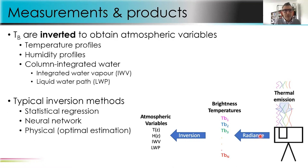Brightness temperatures are then inverted to obtain atmospheric variables: temperature profiles, humidity profiles, and also column-integrated water in terms of integrated water vapor and liquid water path. To invert brightness temperatures into atmospheric variables, you need inversion methods. Typical inversion methods are statistical regression and neural network, usually provided by manufacturers in their software. However, there are also more physical inversion methods like optimal estimation or 1D-Var, and tools are already available to download and use with your data.